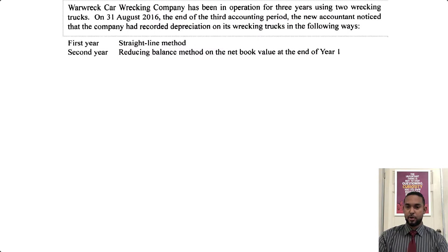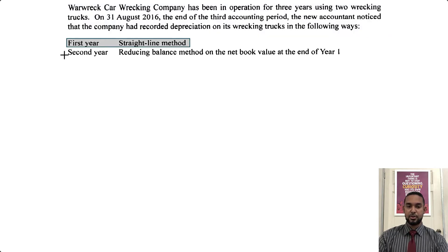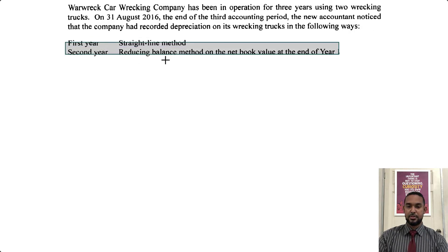So as we usually do, we take a read. Warwick Car Wrecking Company has been in operation for three years using two wrecking trucks. On 31st August 2016, the end of the third accounting period, the new accountant noticed that the company had recorded depreciation on its wrecking trucks in the following ways. In the first year they used a straight line method, but in the second year they used the reducing balance method on the net book value at the end of year one — I don't think that's a good thing to do.